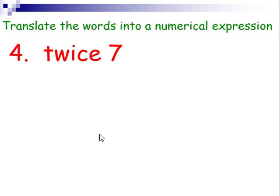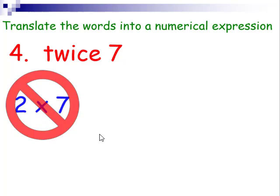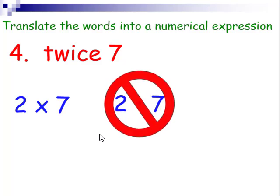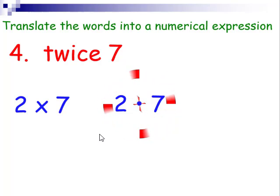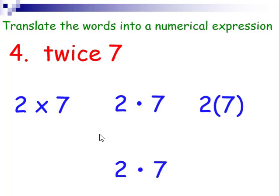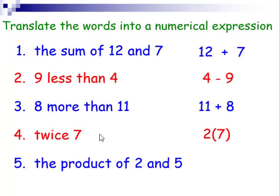Twice seven. Well, this one we can write it three different ways. We can write it as two times seven. But remember, we're going to be using a lot of variables and x is one that's very commonly used. We don't really want to use the dot because remember, that dot indicating multiplication, that dot may look like a what? A decimal. The way that we like to show multiplication the most is using parentheses. So when we read twice seven, we want to write two times seven using the parentheses. So again, the product of two and five, remember, we want to use parentheses.